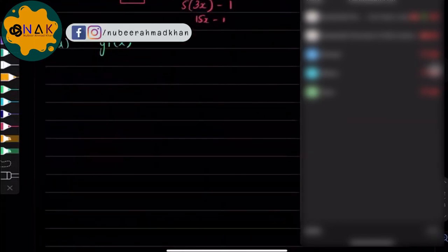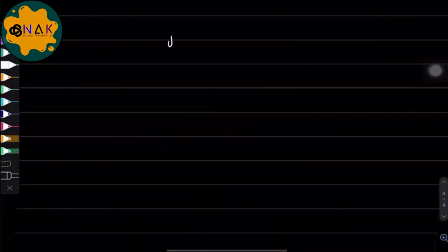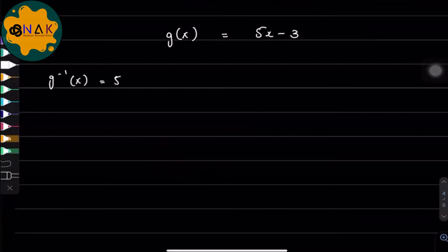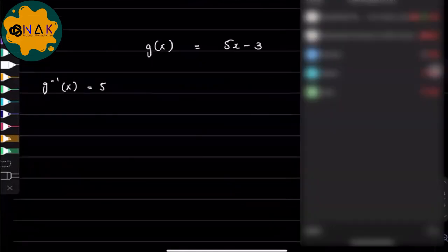How do you take an inverse of a function? g(x) is equals to 5x minus 3, and I say that find me g inverse of x equal to 5. How do you think you can solve this question? Do we have to isolate x again?